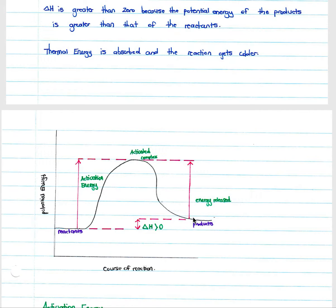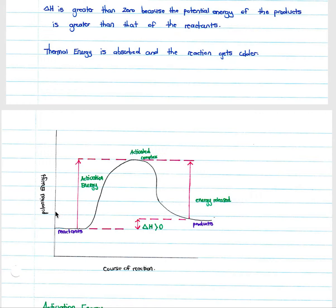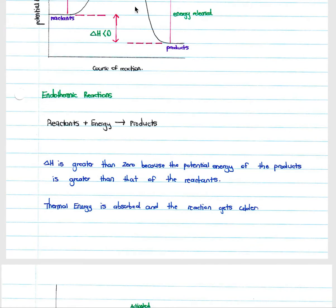On the potential energy graph for an endothermic reaction, reactants sit lower than products. The activation energy is greater than the energy released because more energy is absorbed than released. Delta H is positive because products minus reactants is greater than zero. To summarise: if delta H is negative the reaction is exothermic; if delta H is positive the reaction is endothermic.